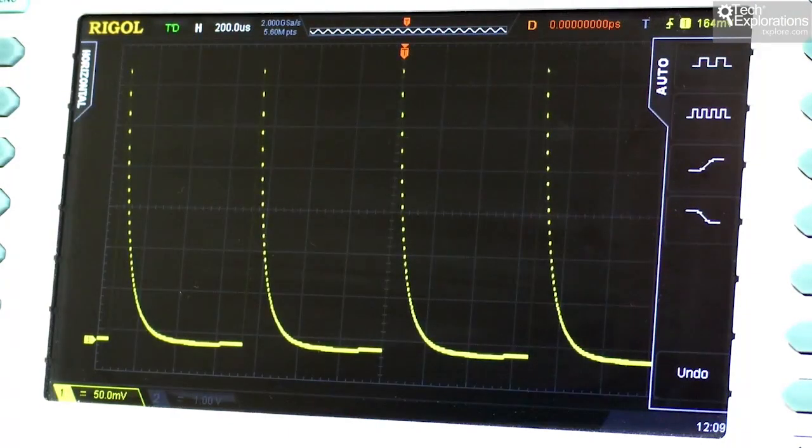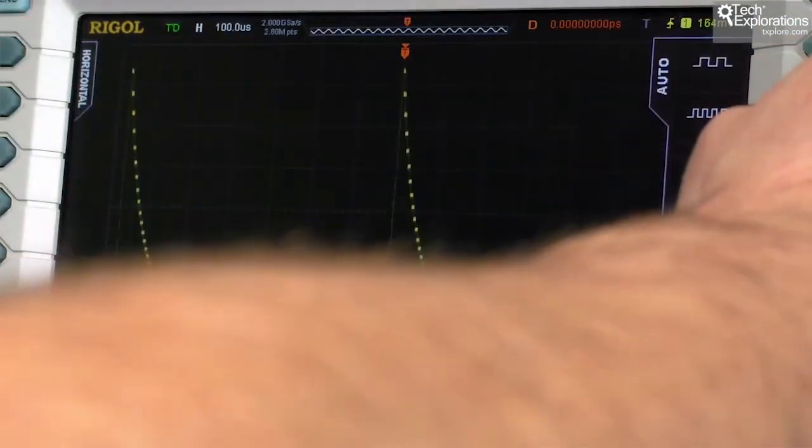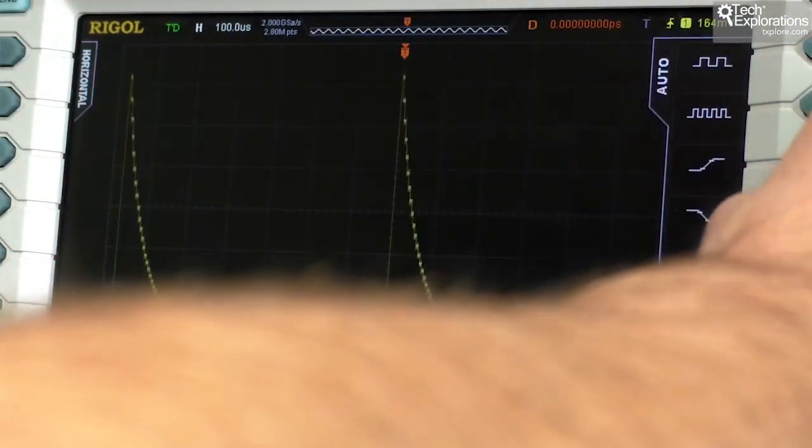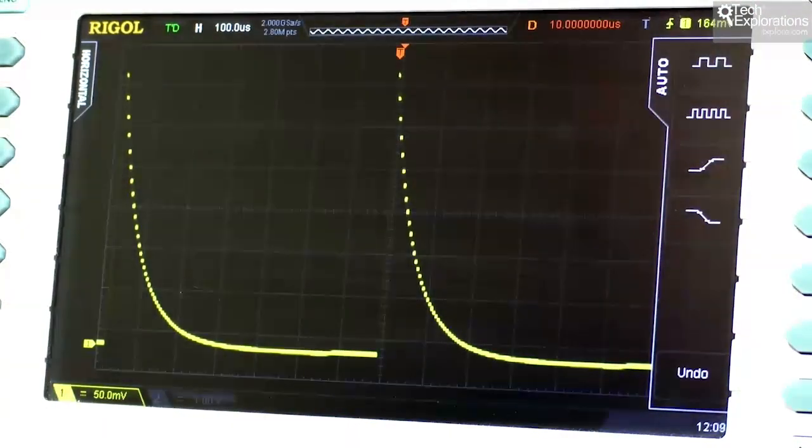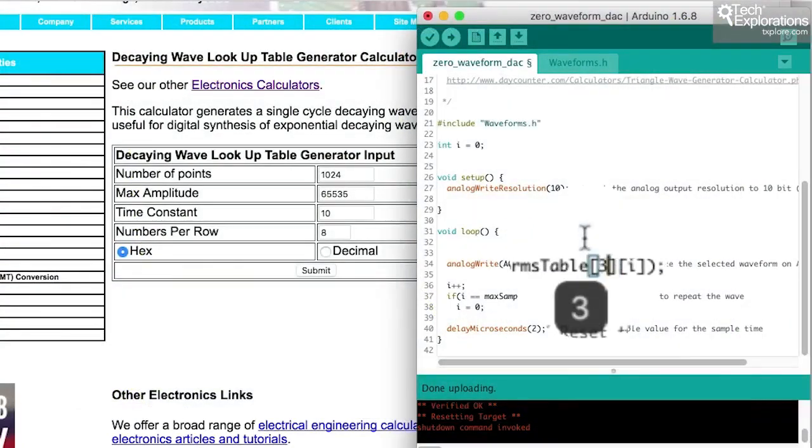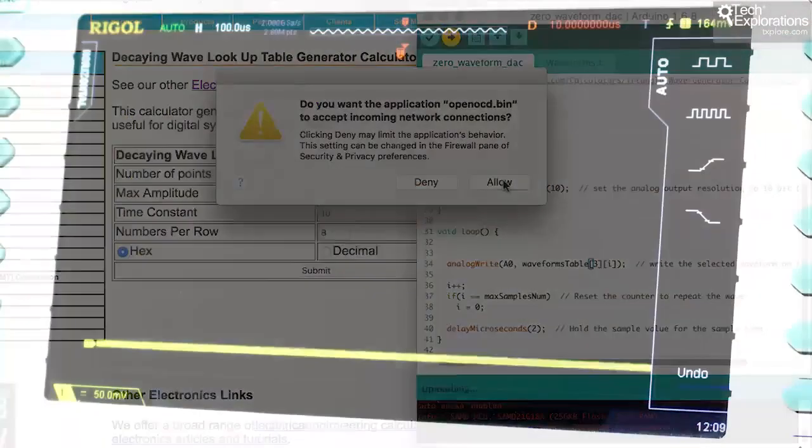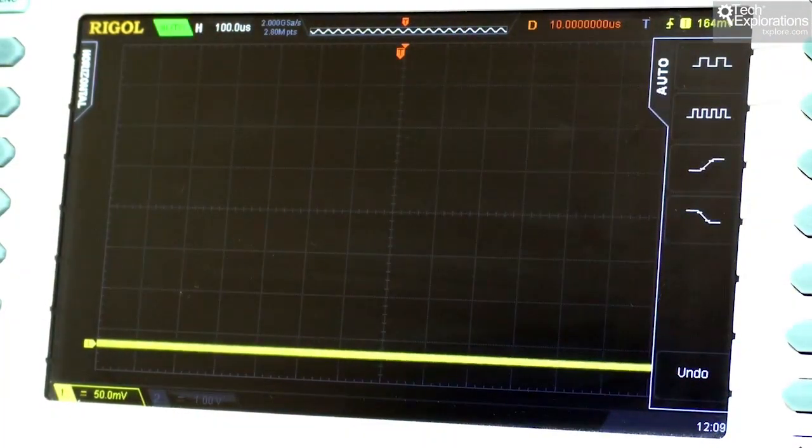Do it again. So now I'm looking at the decaying wave waveform. Okay, decaying wave. And for the last one, let's have a look at the square wave. There you go.